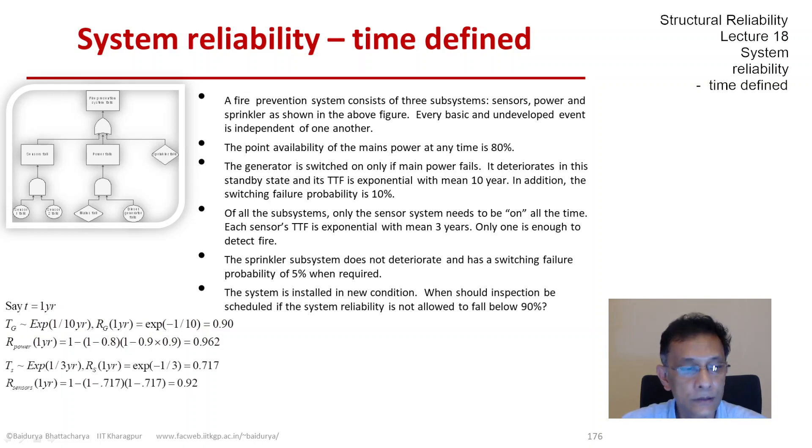The sensor system has two sensors, each with an exponential TTF with mean three years, so the sensor system reliability is 0.92 at the end of one year. The water system has no change—its reliability is 0.95, as we had in the previous reincarnation of this example.